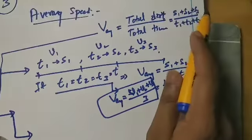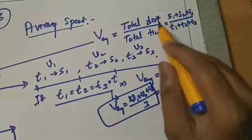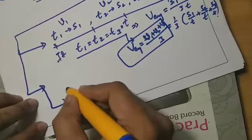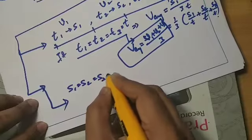Next, different time intervals but equal distances covered. If S1 is equal to S2 is equal to S3 is equal to some S.